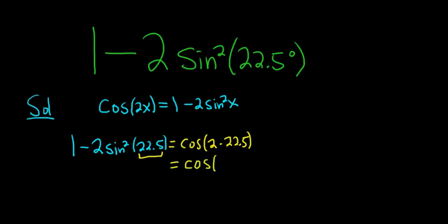This is equal to the cosine of 45 degrees. The cosine of 45 degrees is the square root of 2 over 2, and that's just from memory.